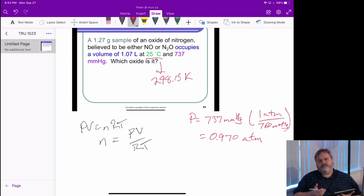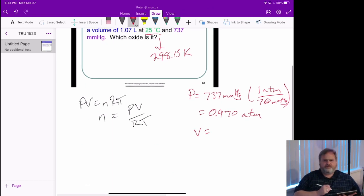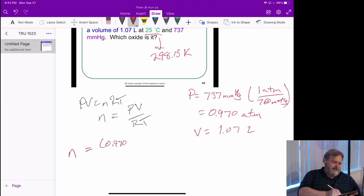So now we have a pressure, we have a temperature in Kelvin that we needed, and we also see that we have a volume. So that gives us the 1.07 liters here, and now we can just start plugging things in.